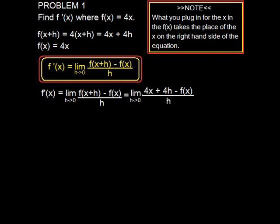And we obtain the limit as h approaches 0 of (4x + 4h - f(x)) over h. Now if we plug in f(x) we see that the 4x from f(x+h) cancels out with the 4x from f(x).